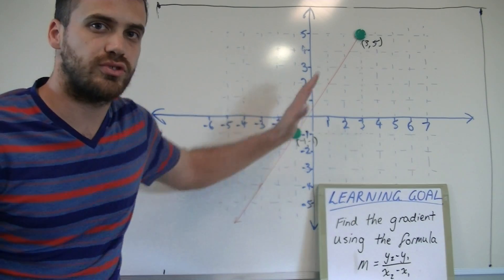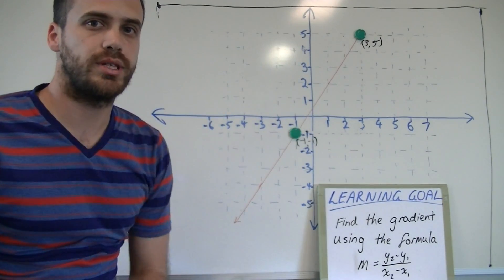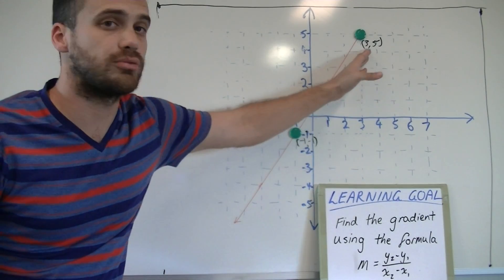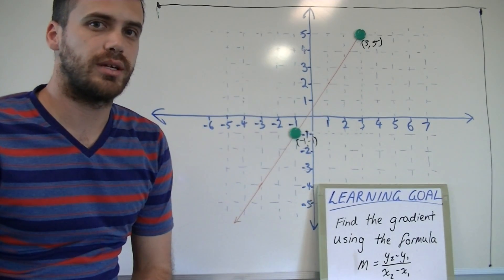You can see that I have a straight line, just like before, and we have two points on that line. One of the points is (3, 5), and the other point is (-1, -1).